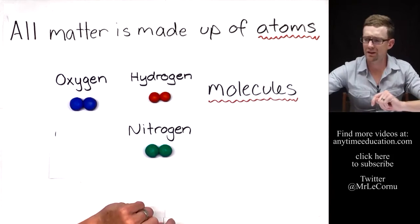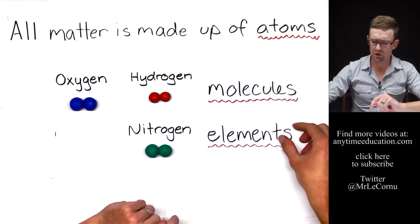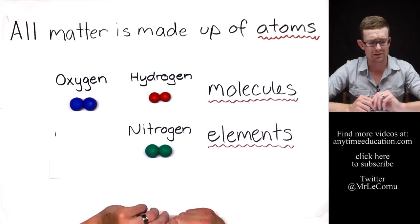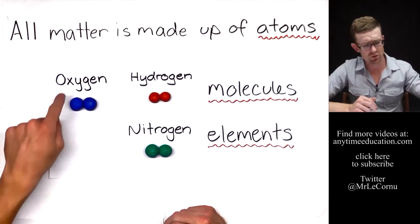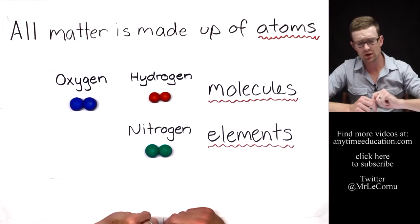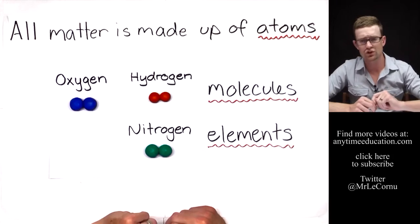We call this type of molecule elements. We call them elements because they are made up of one type of atom. The oxygen molecule is made up of only oxygen atoms, same with the hydrogen molecule and same with the nitrogen molecule.